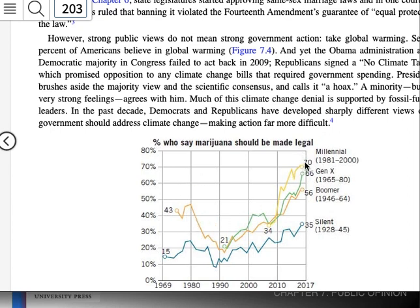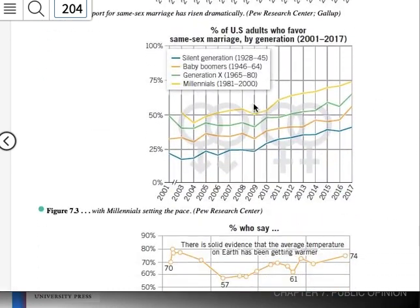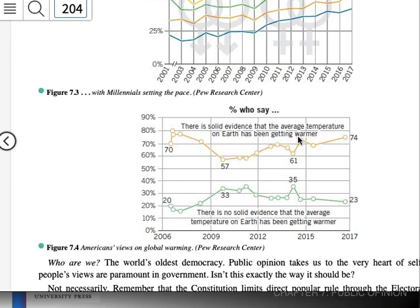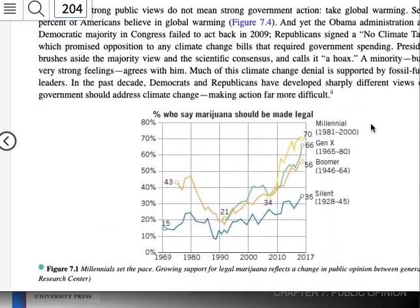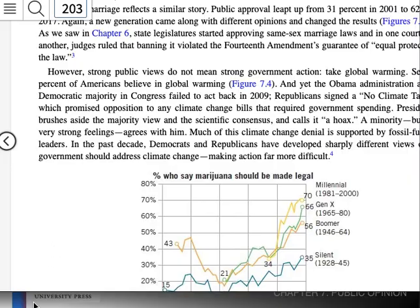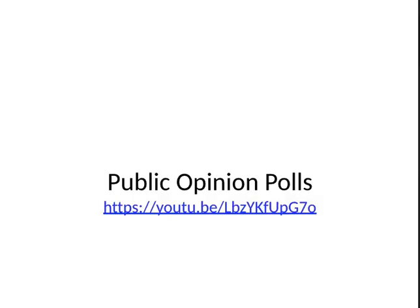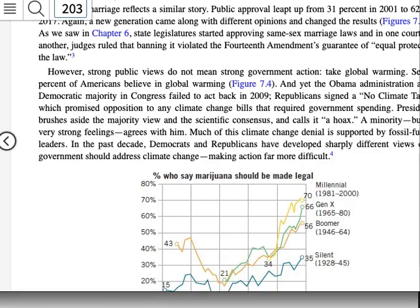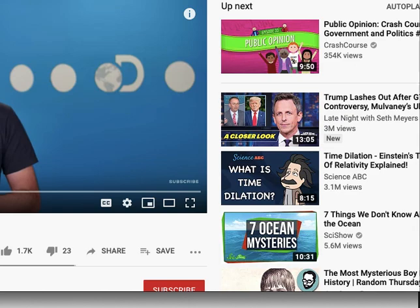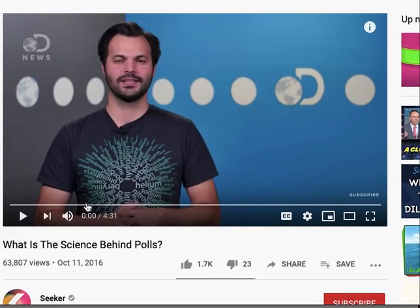Even though 74% of Americans say there is solid evidence that the average temperature of the earth is getting warmer, this particular government is not acting on that. Looking at the charts, you can see data broken down by age groups — there's usually a generational difference. Another chart shows how many people oppose or favor same-sex marriage over time: opposition went down and favorability went up.